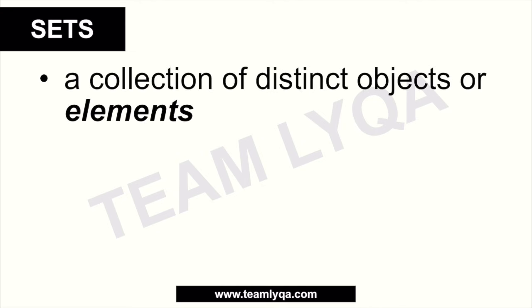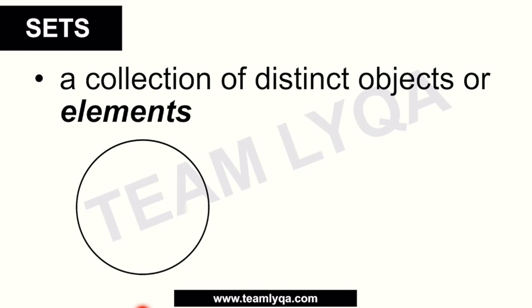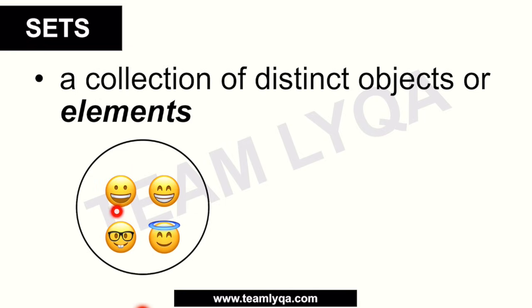Let's start with a simple definition of sets. The definition of a set is this: it's a collection of distinct objects or elements. Let's break that down a little. It says they are distinct — meaning they are different from each other. For example, if we have a group containing smileys or emojis, even if they are all smileys, they are distinct from each other. Each one of them is what we call an element of that set.